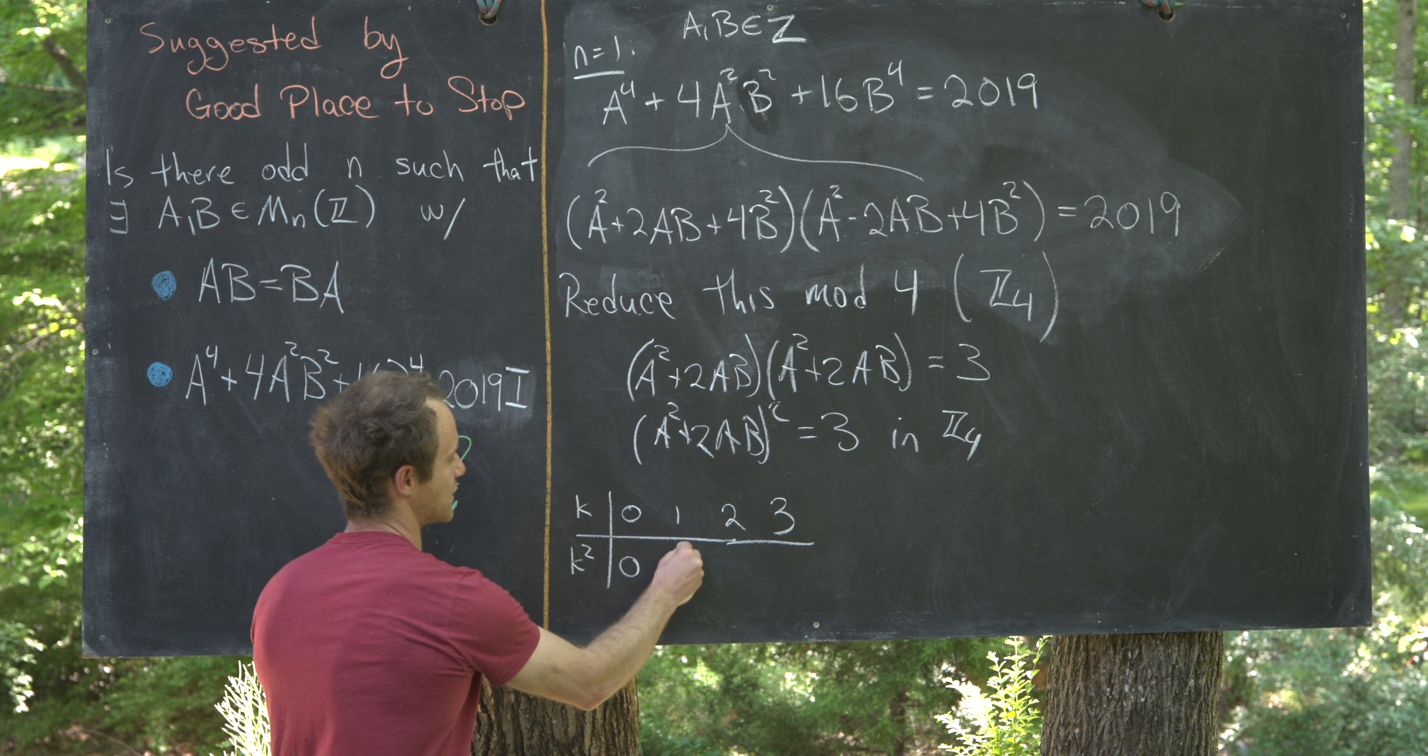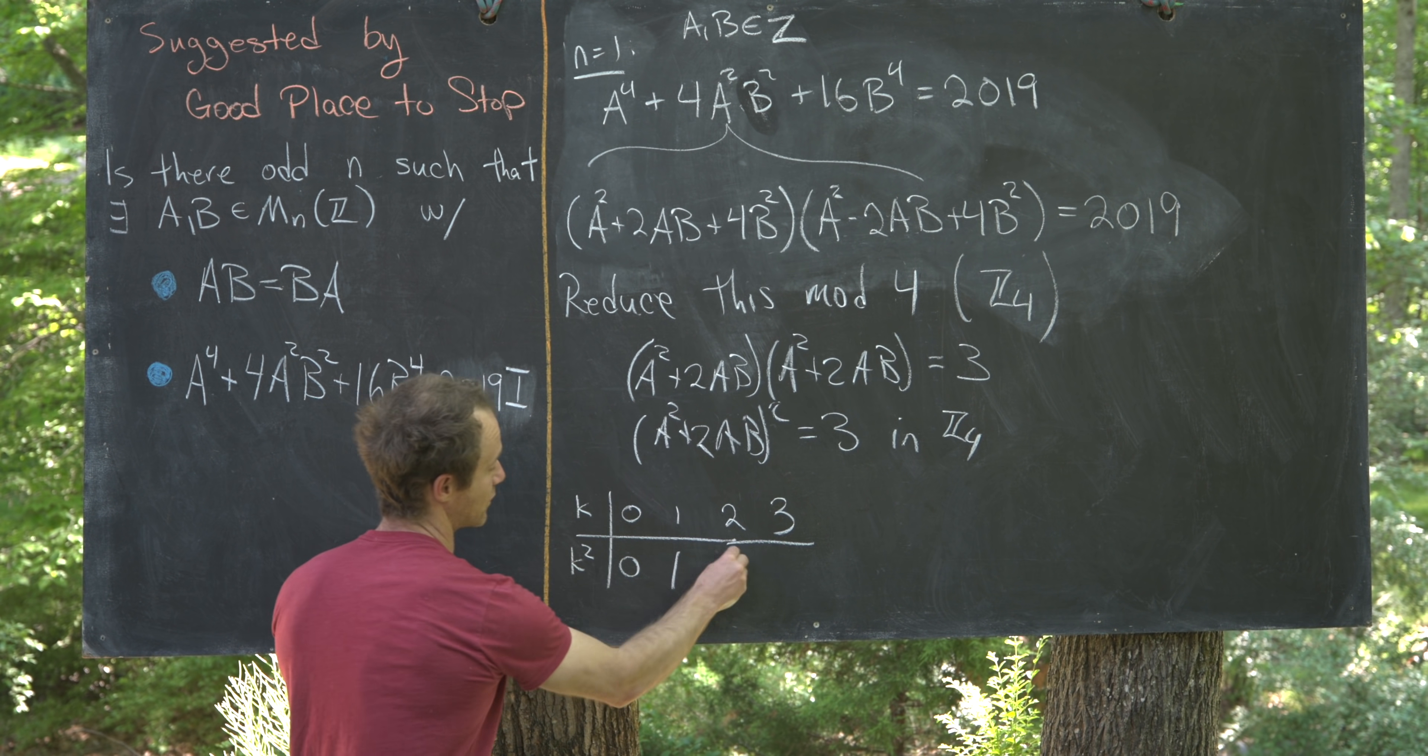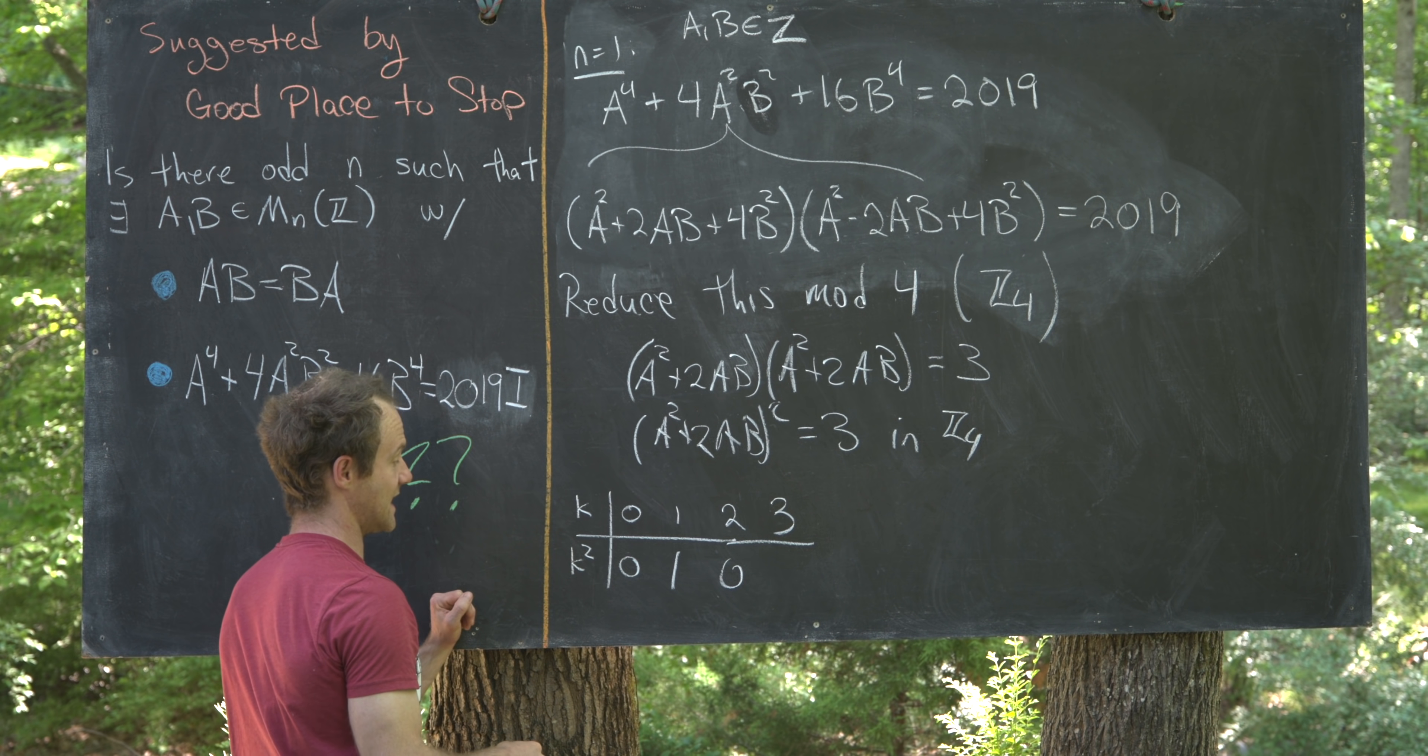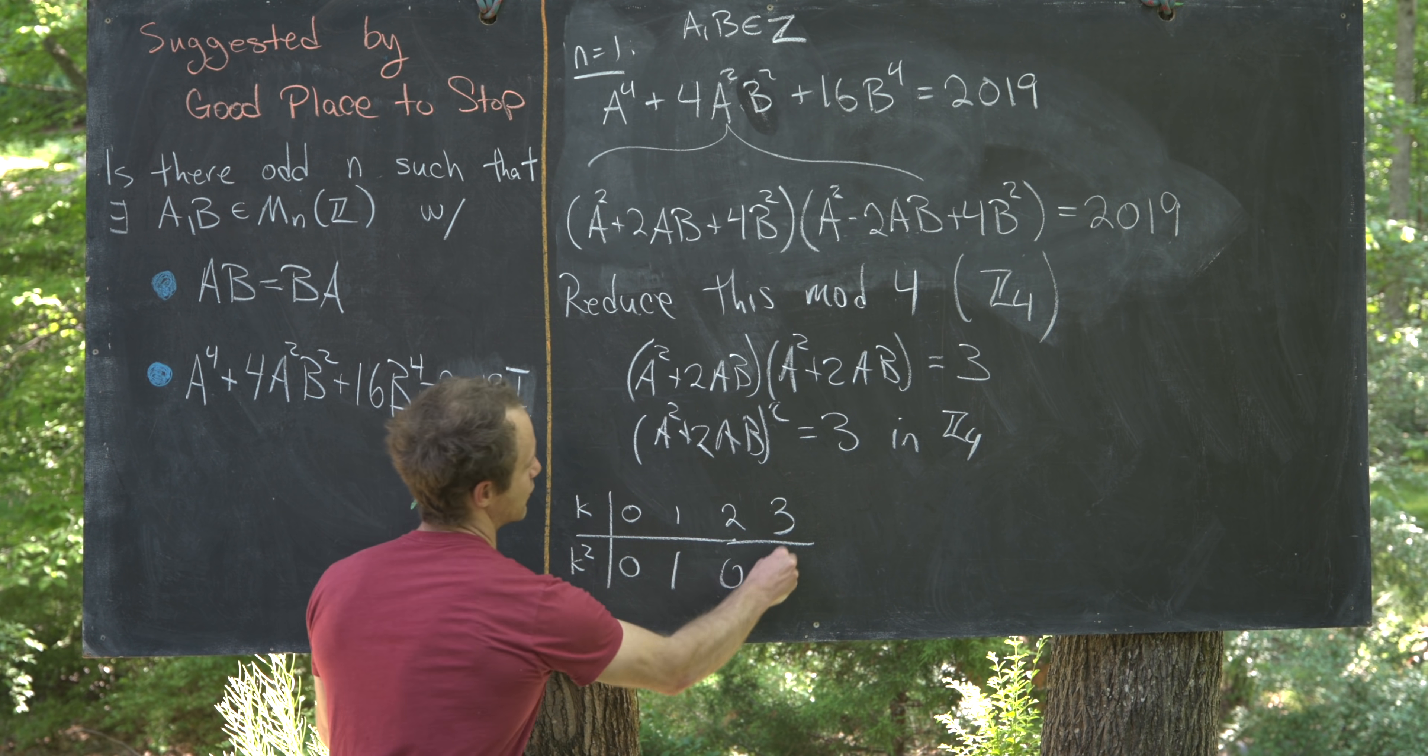0 squared is 0. 1 squared is 1. 2 squared is 4, which is 0. 3 squared is 9. But 9 is equal to 1.